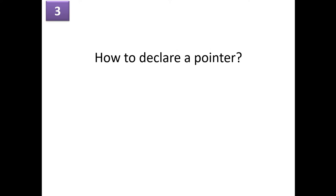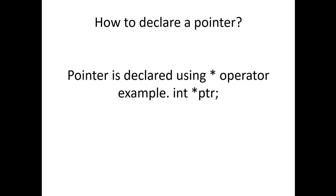The next question is: how to declare a pointer? A pointer is declared using the star operator. For example, 'int *ptr'. So ptr now becomes a pointer which can point to an integer data type.